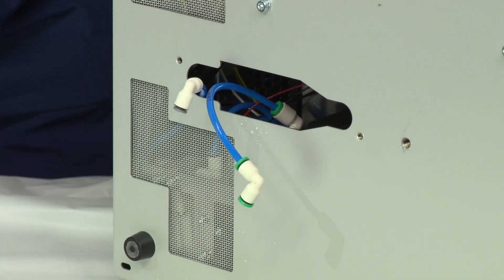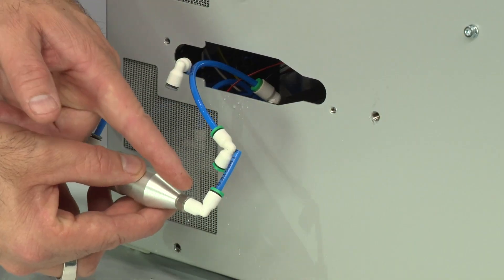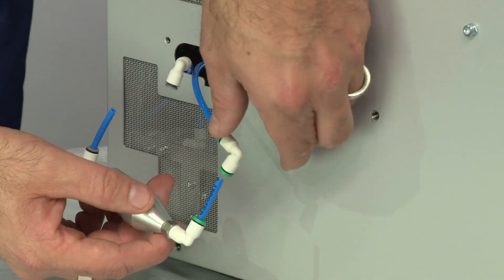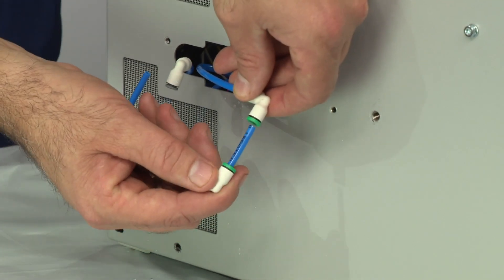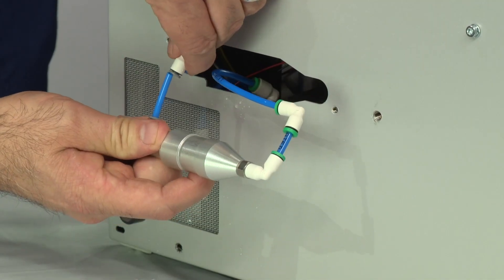Remove the water filter and replace it with a new one. Reconnect the tubes, making sure the ring colors match. Green to green on one side, gray to gray on the other side.